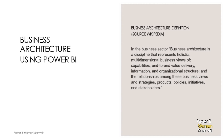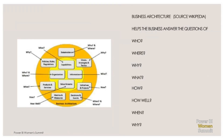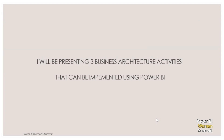Business architecture covers products, policies, initiatives, and stakeholders. It helps organizations answer different business questions and how the organization implements strategies — identifying who is implementing the strategy, where, why, what, how, how well we are doing in the business, when, and the whys. I'm going to present three business architecture activities we can implement using Power BI, though we can get very creative with visuals and there are many more possibilities.